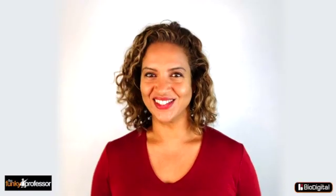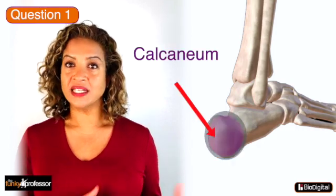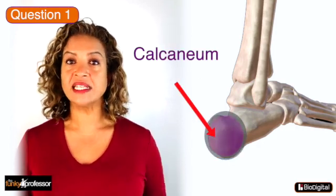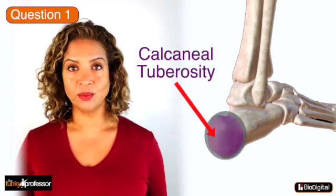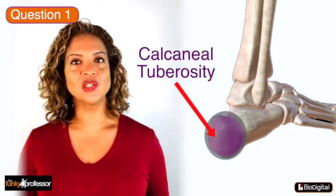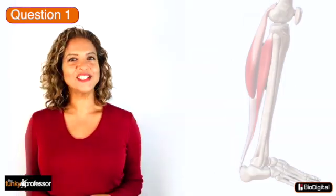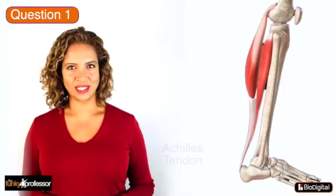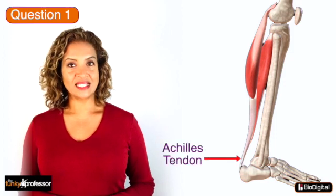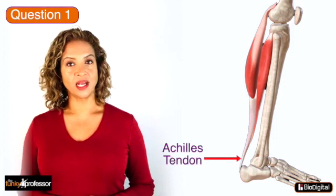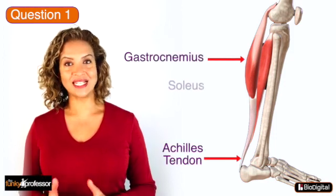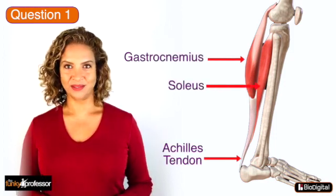The answers. Question 1 is the calcaneum, and the part that is highlighted is the calcaneal tuberosity, which is where the Achilles tendon attaches. And if you remember from a previous quiz, the Achilles tendon is made up from the gastrocnemius and soleus muscles.